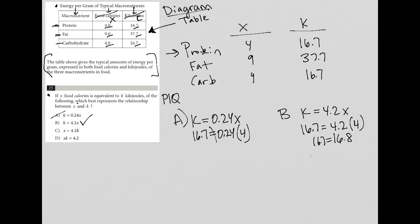We see this as which best represents. Anytime you see this word best, typically means it's not going to be the exact answer, just which one's closest. But I like B. Let's see if C is a good answer. Choice C says that X equals 4.2K. For protein, X is 4. Is it true that 4 equals 4.2 times K, which is 16.7? No, that is not true. C is gone.